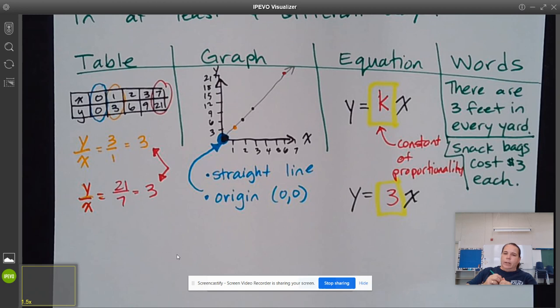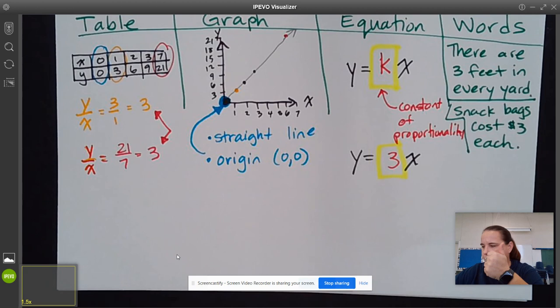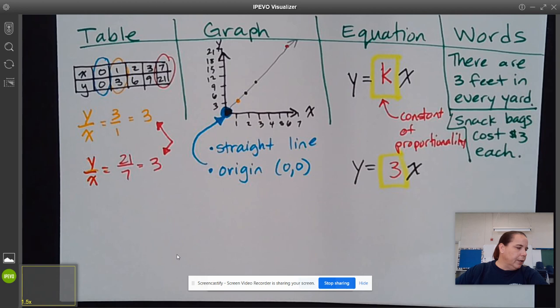So to kind of wrap it all up, the things that we need to make sure we are clear about when we talk about proportional relationships is that there will be a constant of proportionality.